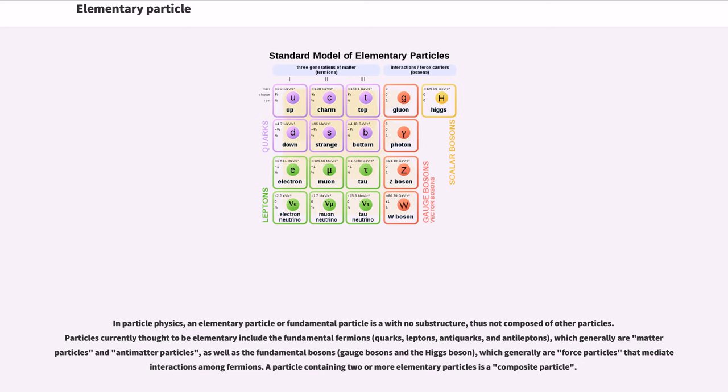As well as the fundamental bosons: gauge bosons and the Higgs boson, which generally are force particles that mediate interactions among fermions. A particle containing two or more elementary particles is a composite particle.